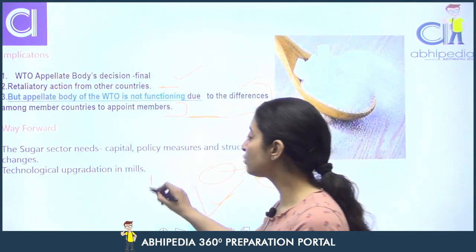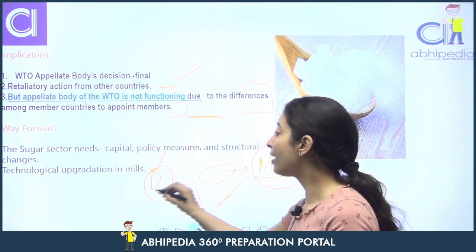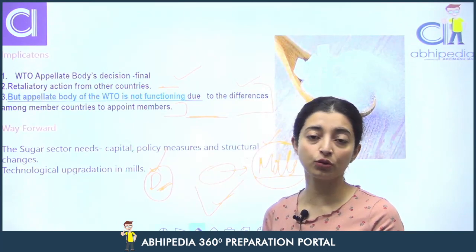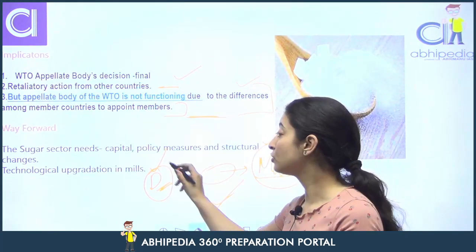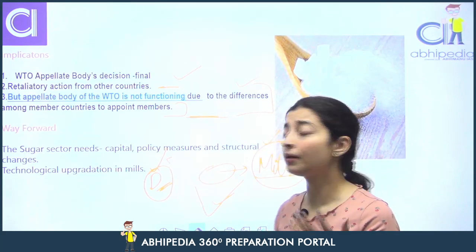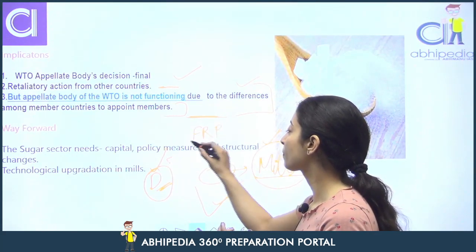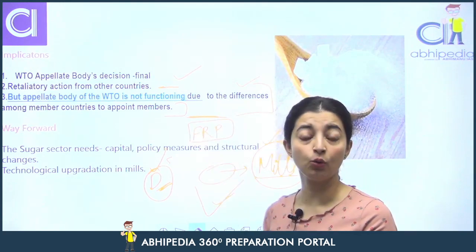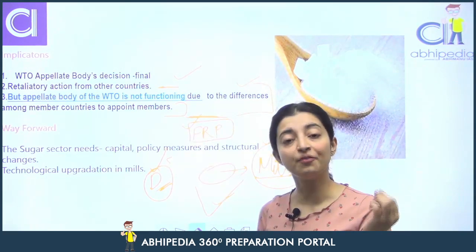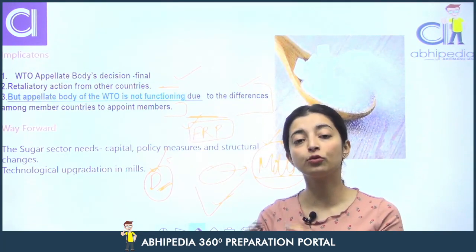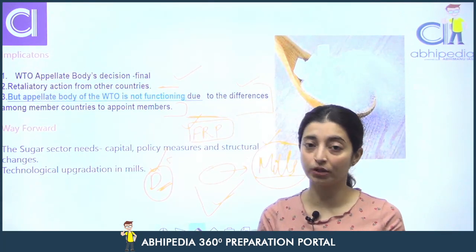Jo demand hai sugarcane ki woh utni hi rehti hai — hum jitni bhi subsidy provide kar dein, production bhi badhegi, but demand toh stagnant hai na, toh phir kya karoge us production ka? Iske karan jo iska pricing hai woh bhi bhadiya nahi ho sakti. Agar aap FRP de ke farmers ko support bhi kar dete ho toh overall government toh losses mein ja rahi hai na — toh it is better ki aap kuch reforms hi le aao sector mein.